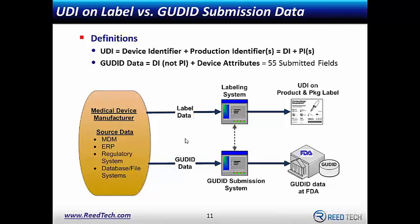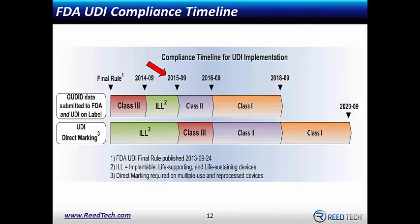This timeline: the final rule was September 24th, 2013. Last year, September 24th, 2014, Class III devices were submitted. This year — September 24th — implantables, life-supporting, and life-sustaining devices need to be submitted. Then the big chunk comes in September 2016 when the remaining Class IIs must get in. Direct marking is also part of this timeline.